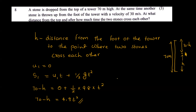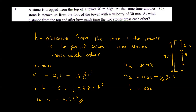For the thrown stone, u2 equals 30 meters per second. S2 equals u2·t minus half g·t², since gravity acts downward against the motion. So H equals 30t minus half into 9.8 into t squared, that is H equals 30t minus 4.9t squared.